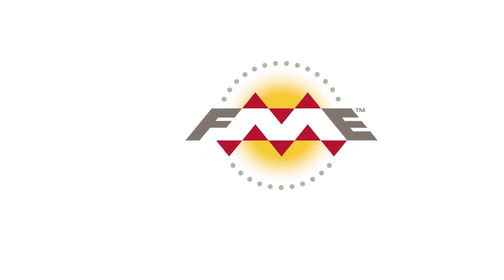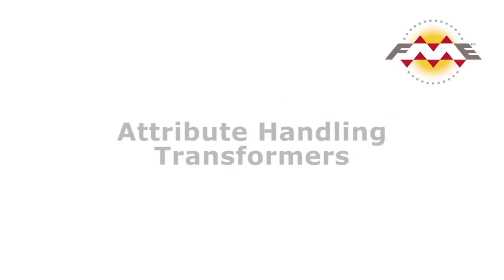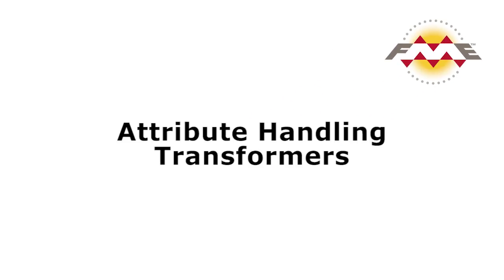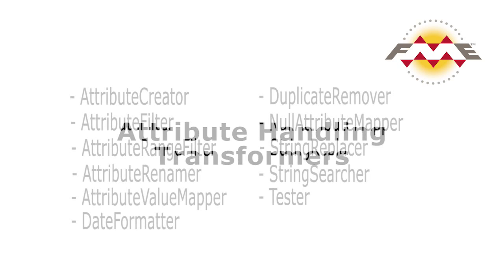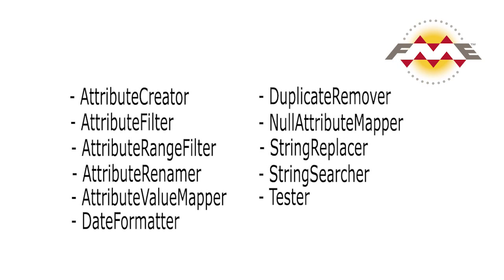In this tutorial we will perform a very common transformation: taking non-spatial data in a CSV file and writing it out to a spatial format, in this case MapInfo TAB. To create the desired output we will be using a number of the top 25 FME transformers.